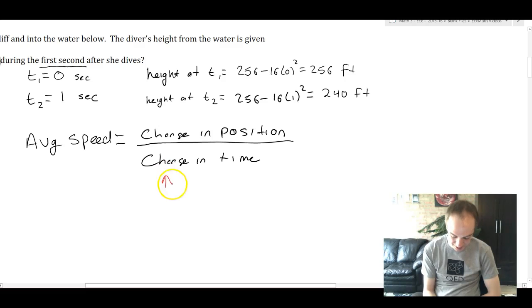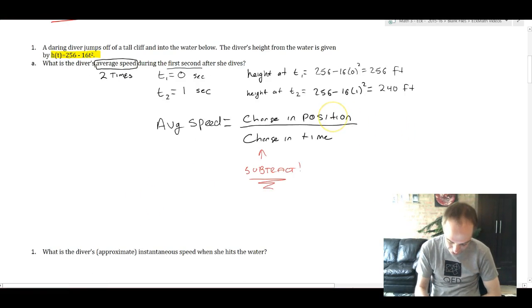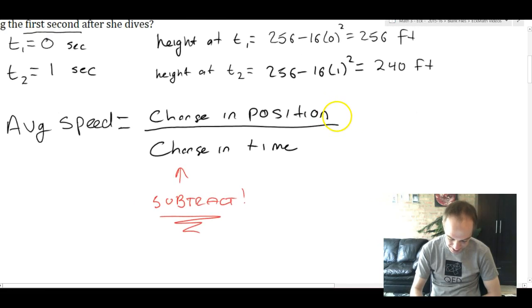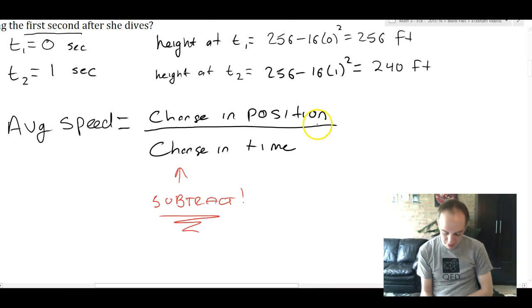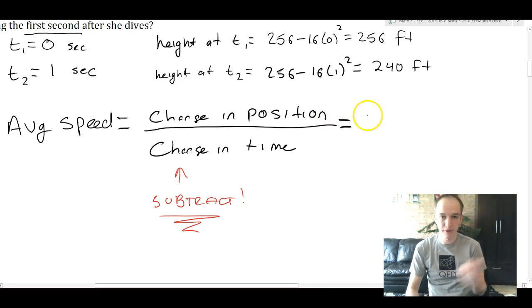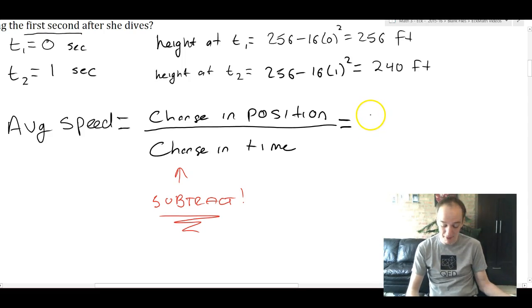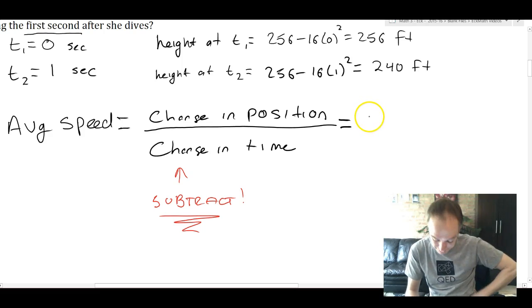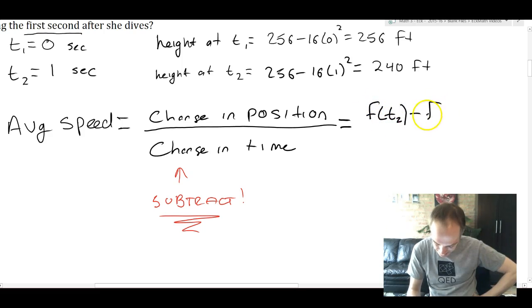Change, that word you see, means subtract. When we subtract the positions and subtract the times, that will tell us the average speed. When we do this change in position, it's kind of like the slope formula. So I'm going to write this formally as what we call a difference quotient. Difference means subtraction, quotient means divide. So the word difference quotient means we're going to subtract and divide. We're going to have f of t2 minus f of t1 over t2 minus t1. That's how we're going to get the change in position and the change in time.